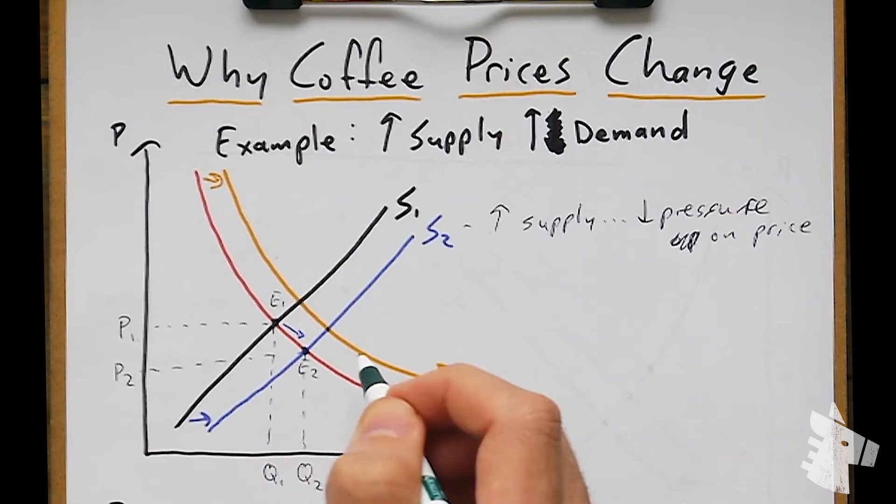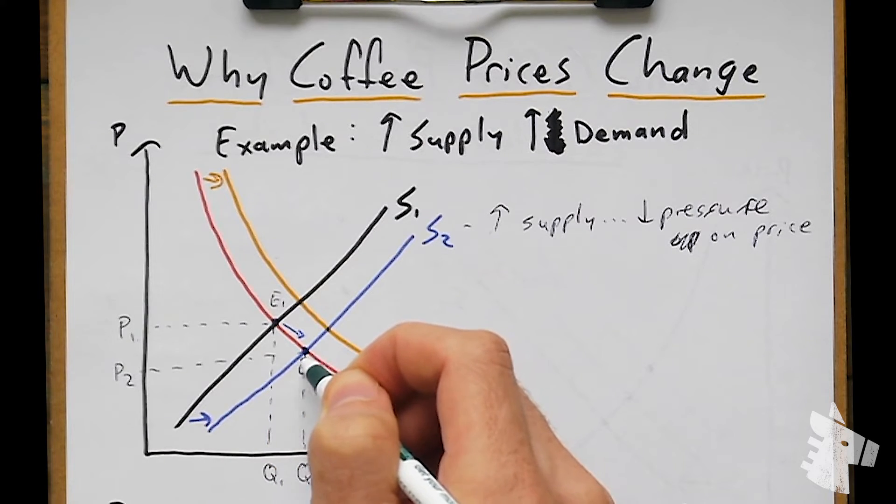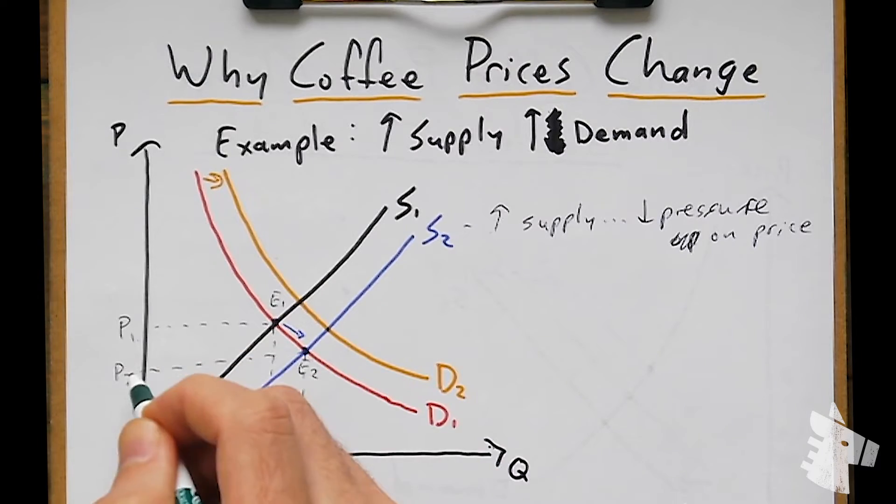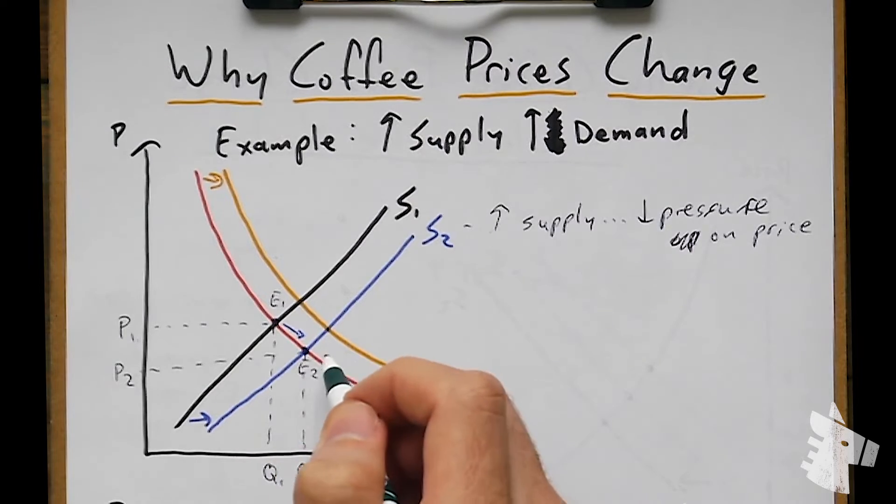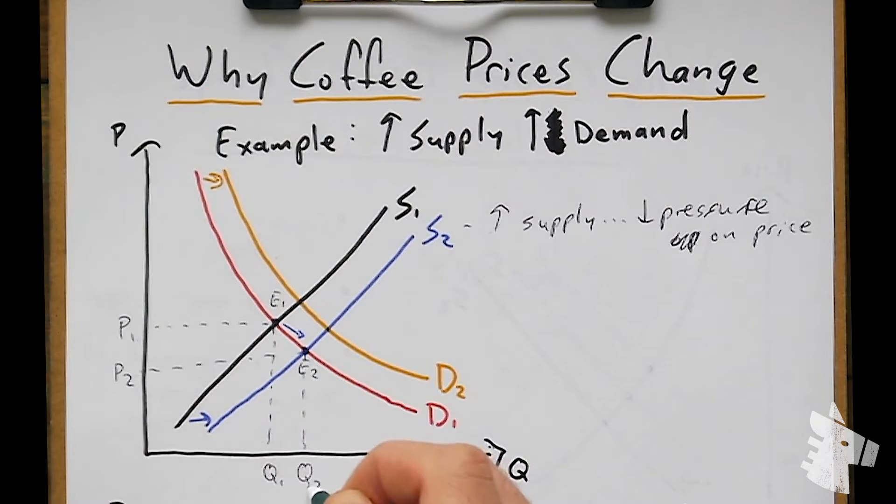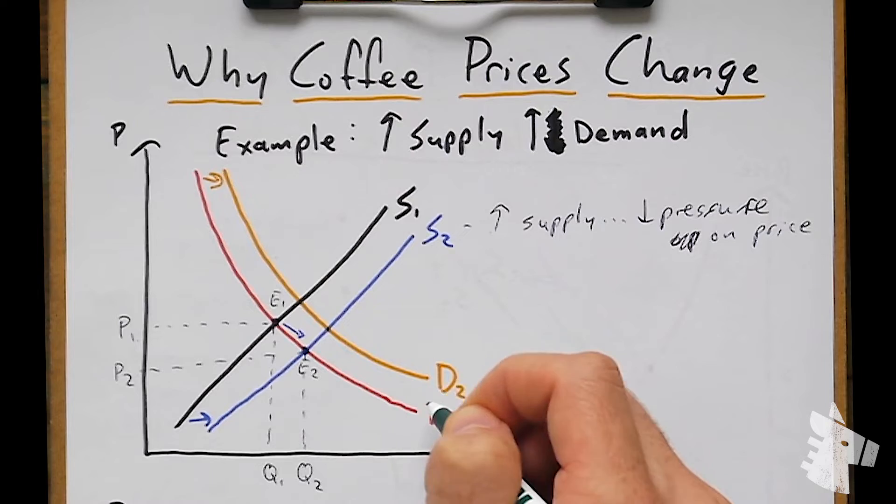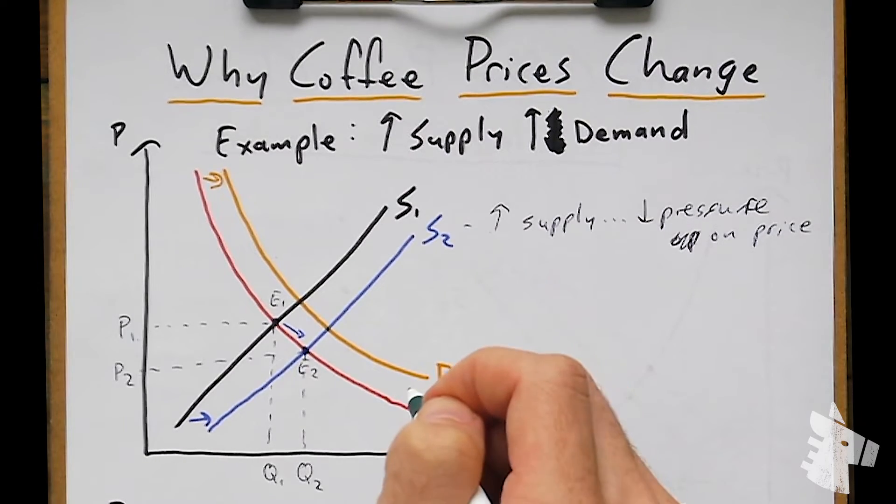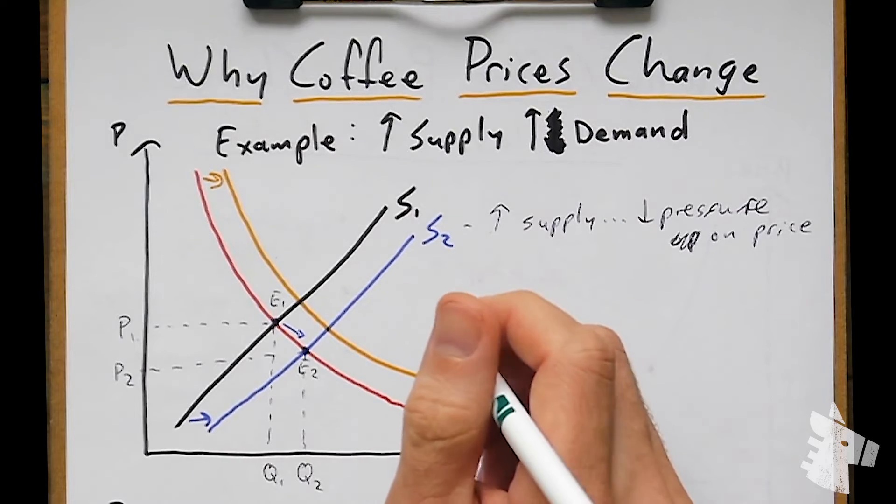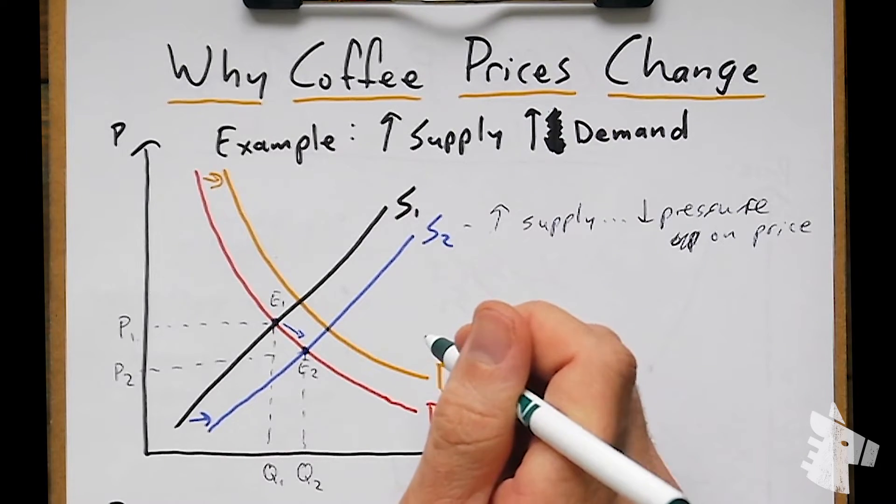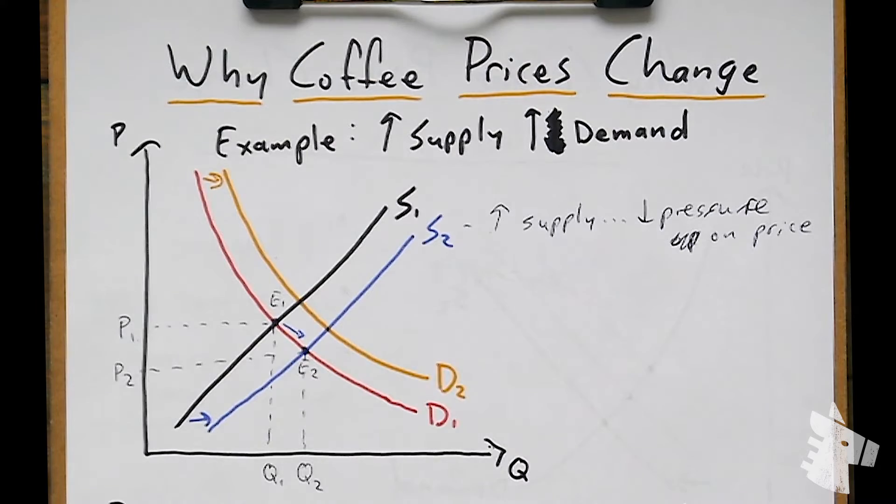At our new equilibrium point, where our initial demand curve meets our second supply curve, we have P2, the price, which is lower at that point because of additional supply with the same demand, and Q2, our second quantity level, which is the quantity supplied and demanded at P2. We have just introduced another change, and this is an outward shift in demand, so an increase in demand, or an increase in the quantity demanded at all prices compared with the initial demand.